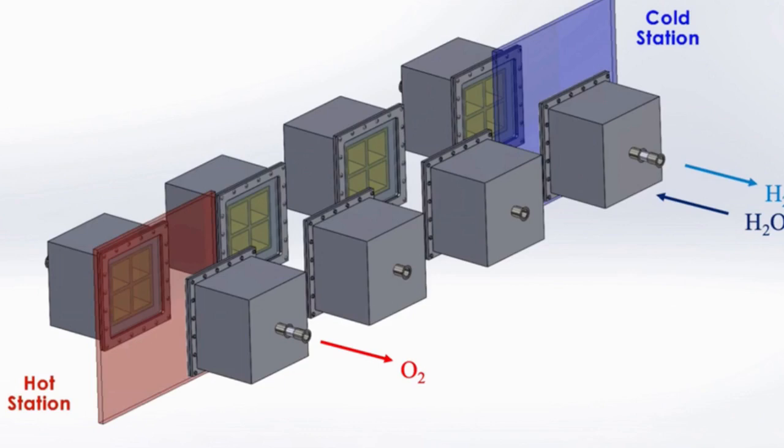This metal oxidation is similar to the rusting of iron in the presence of water, but it occurs much faster. Once hydrogen is separated, the oxidized or rusted metal is reheated in a vacuum, which acts to reverse the rusting process and regenerate the metal.